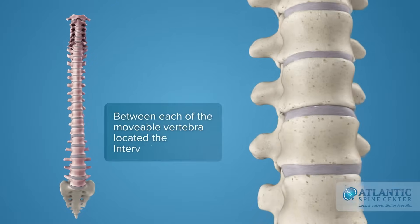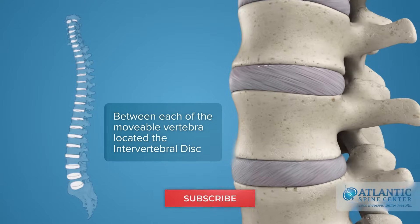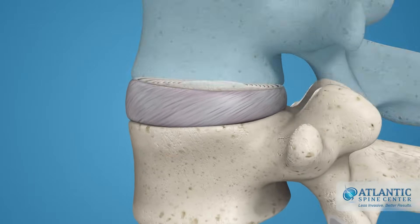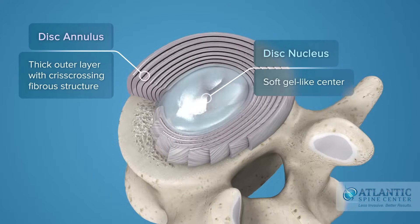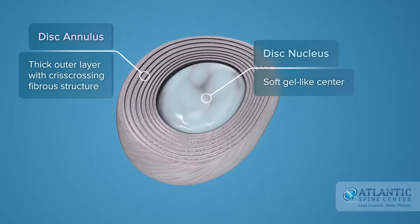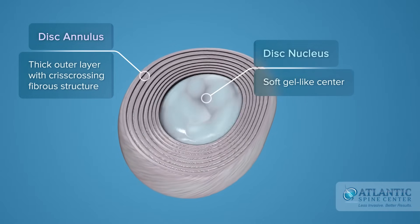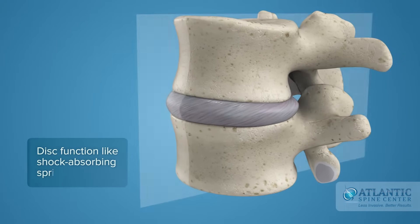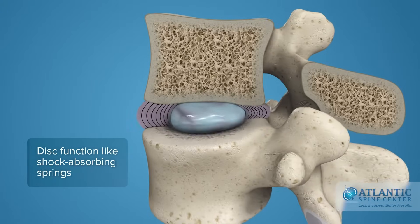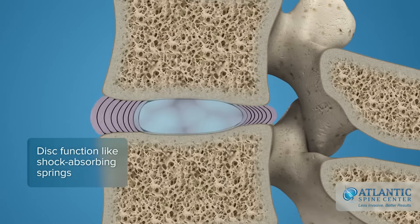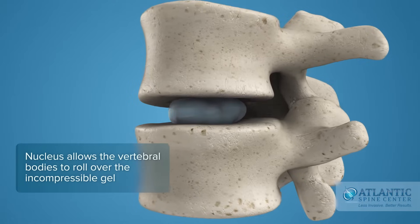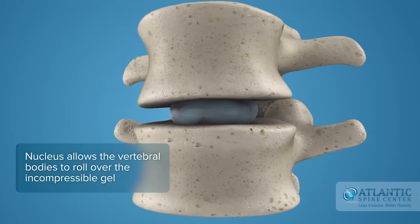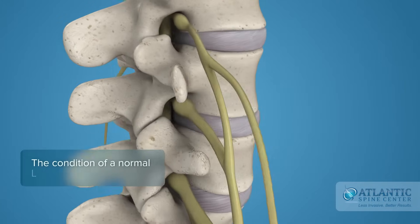Between each of the movable vertebrae is located the intervertebral disc. Intervertebral discs consist of a thick outer layer with a crisscrossing fibrous structure — the annulus — that surrounds the soft gel-like center, the nucleus. Discs function like shock-absorbing springs. The annulus pulls the vertebral bodies together against the elastic resistance of the gel-filled nucleus. When you bend, the nucleus acts like a ball bearing, allowing the vertebral bodies to roll over the incompressible gel.